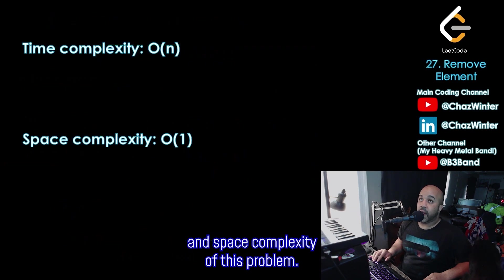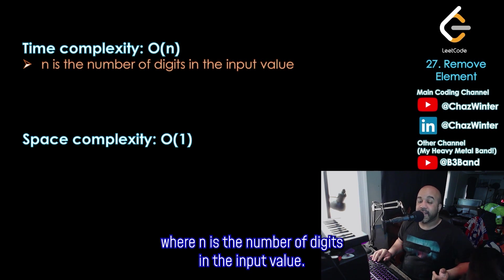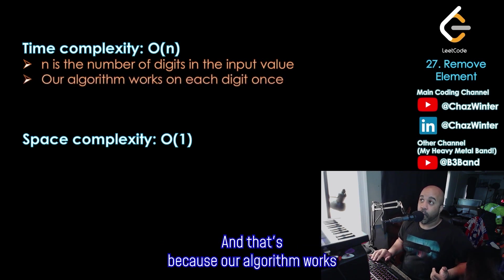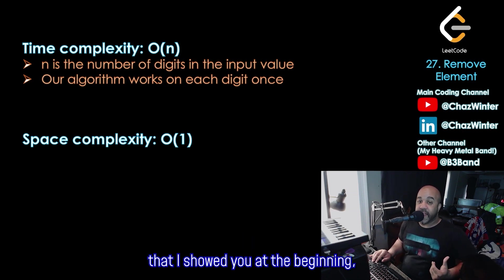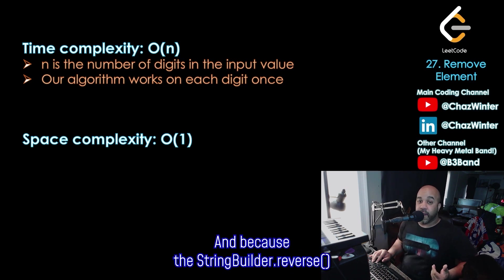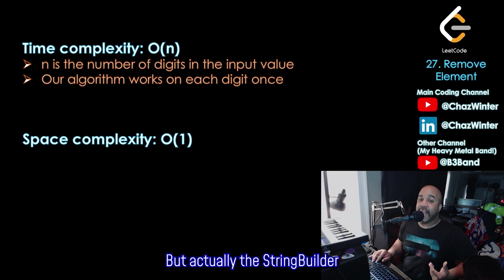And now let's look at the time and space complexity of this problem. The time complexity is going to be big O of n, where n is the number of digits in the input value. And that's because our algorithm works on each individual digit once. If we had used our string solution that I showed you at the beginning, the time complexity would also be big O of n, because the string builder reverse method needs to traverse the entire string. So it will be the same time complexity, but actually the string builder would be slower than our algorithm. Since we're just performing operations on digits, performing those operations on the digits will be actually faster than string builder's reverse method, even though they're both big O of n.